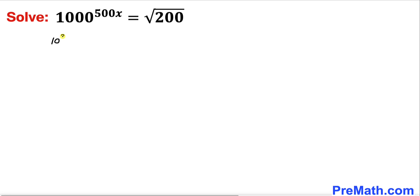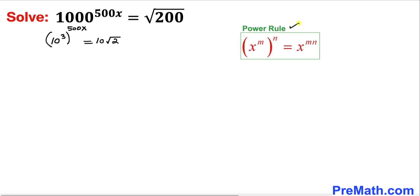Therefore our equation becomes 10 to the power 3, whole power 500x, equals 10 times square root of 2 on the right hand side. Applying the power rule of exponents on the left hand side, the left hand side becomes 10 to the power 1500x, equals 10 times square root of 2.